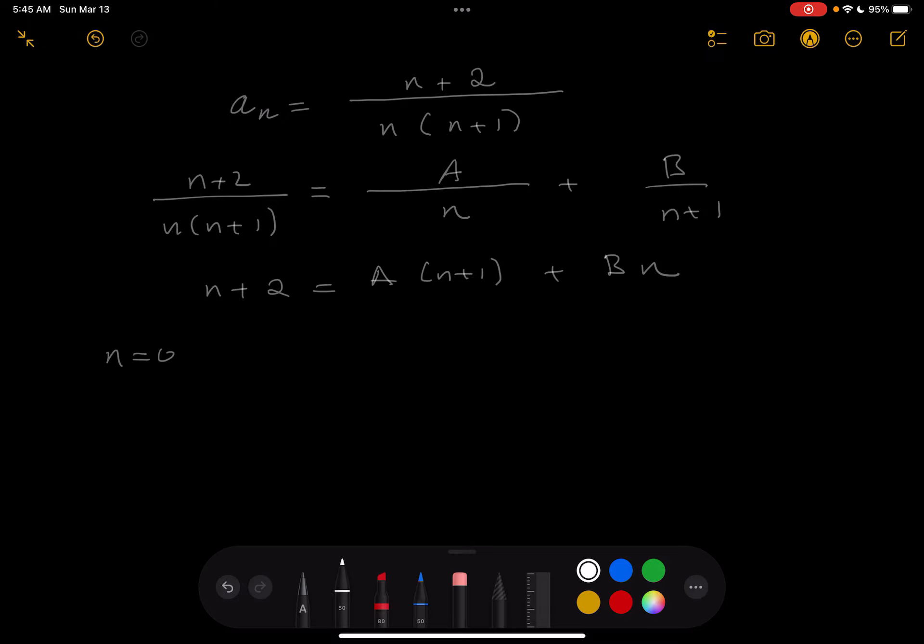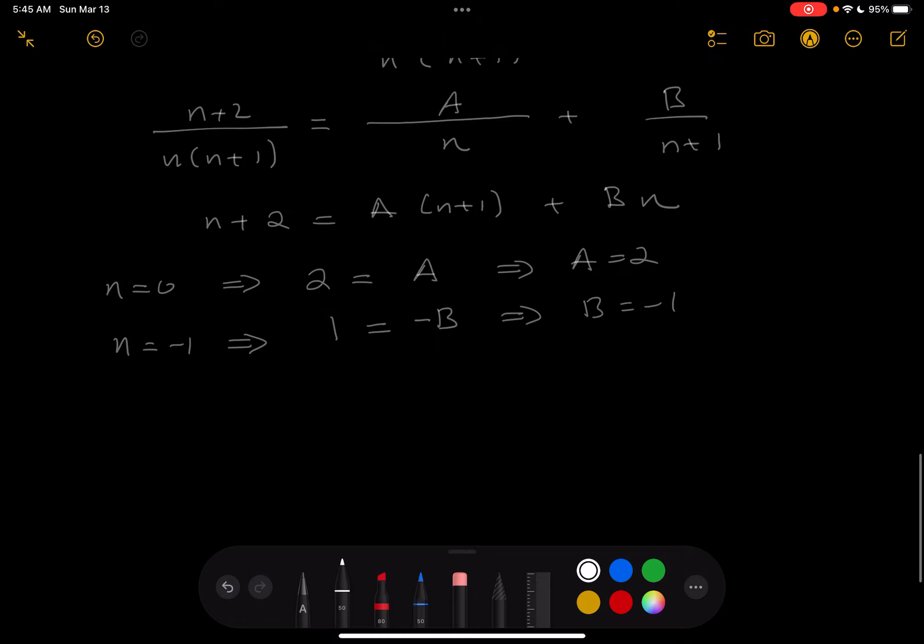I'm seeing n plus 2 equals a times n plus 1 plus b times n. I would pick an easy n value. And n equals 0 is easy. I would get 2. And then I'd get a. I pick another easy value. Minus 1 is easy. And what do you get? You get 1 and then you get minus b. So I know that a equals 2 and I know that b equals minus 1.